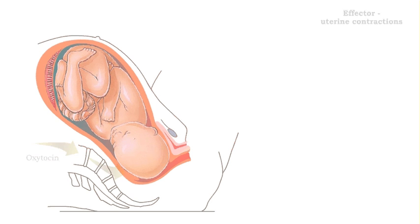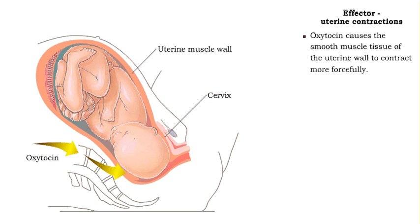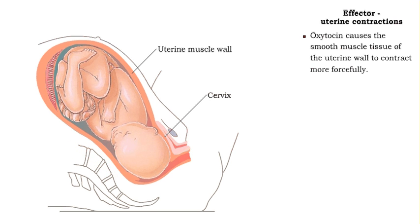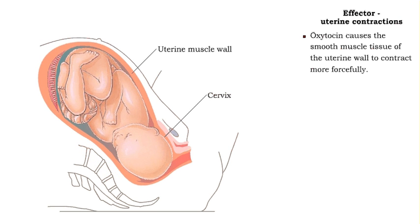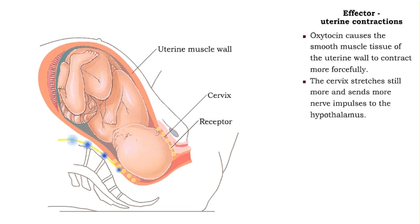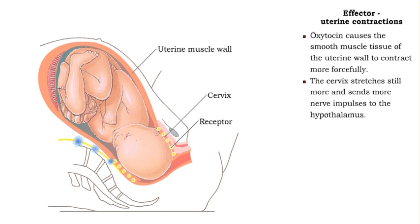Oxytocin stimulates the smooth muscle tissue of the uterine wall to contract more forcefully. These more forceful contractions push the baby further into the birth canal, stretching the cervix more and triggering the stretch receptors to send more impulses to the hypothalamus.